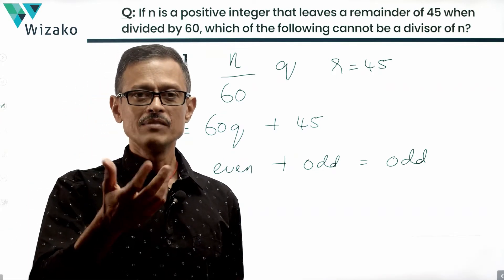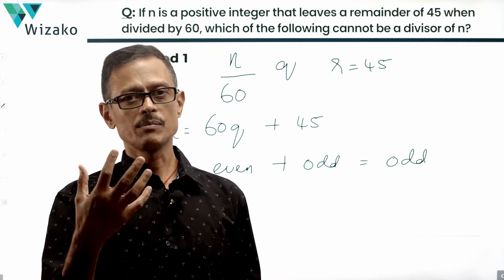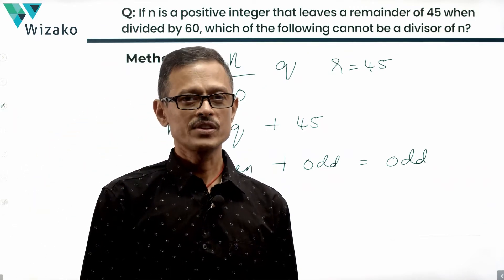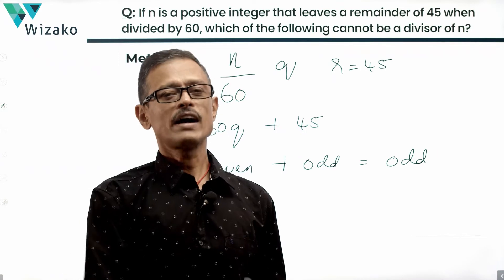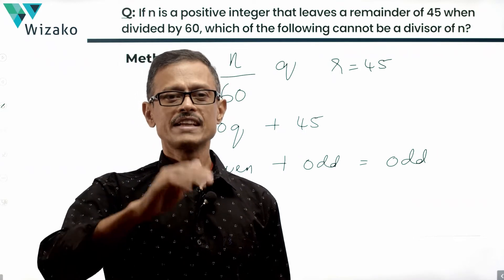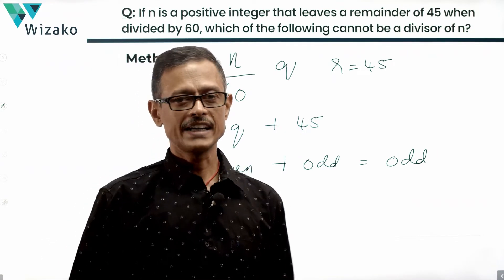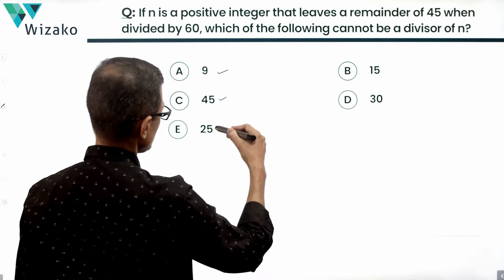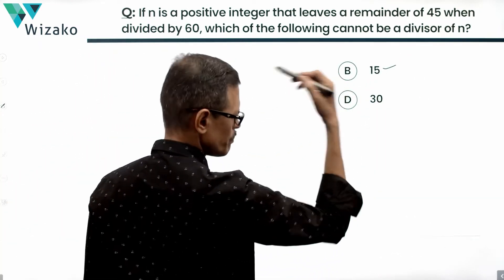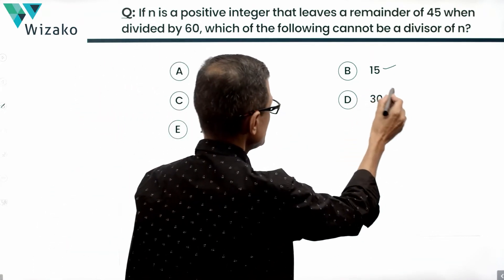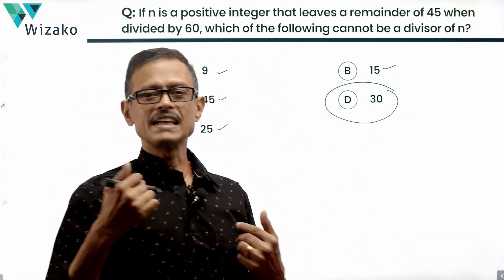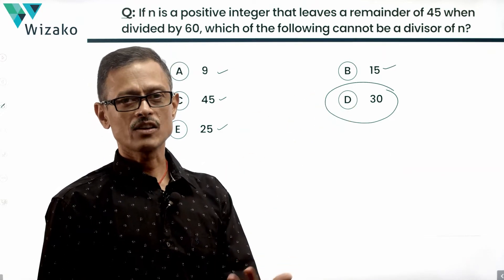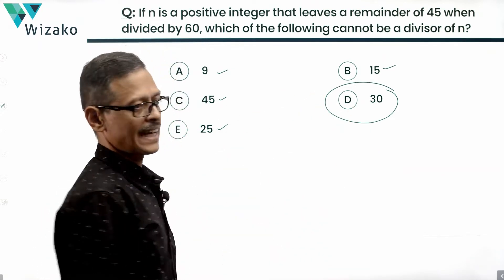An odd number may not be divisible by another odd number, but an odd number will never be divisible by an even number. Let's take a look at the answer options. If you find any answer option which is an even number, you can say that it will certainly not divide n. Looking at the options: odd, odd, odd — and 30 is an even number. An odd number can never be divisible by an even number. So 30 cannot be a divisor of n, and answer option D is the correct answer.